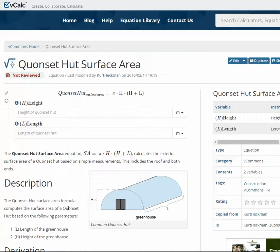To use the calculator, it's fairly simple. You enter the height, maximum height of the Quonset hut, and the length. So we'll go ahead and do that.